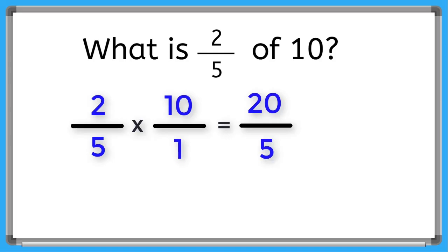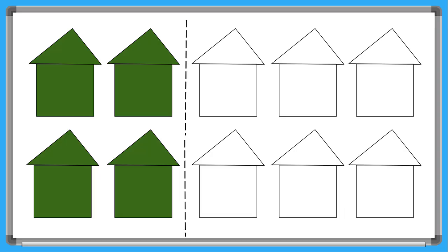So we have twenty over five. And we can simplify using our five fact families. Five goes into twenty four times. So in the case of having ten houses, John would paint four of them green.